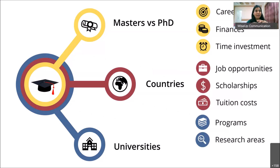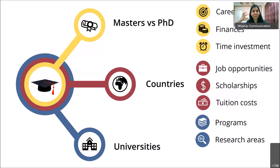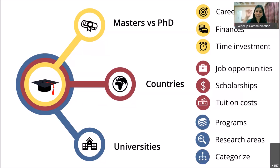Next, consider research areas. If you're going for a research-based degree — like a master's with thesis or a PhD — understand the different research areas the school offers and whether they align with your research interests and work experience. I'd suggest emailing professors beforehand to check whether they have availability in their research groups, because for PhD programs your success depends a lot on your supervisor.